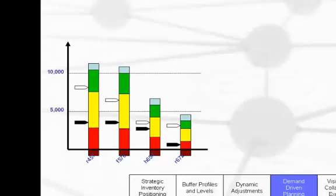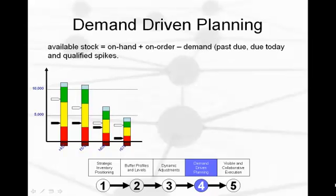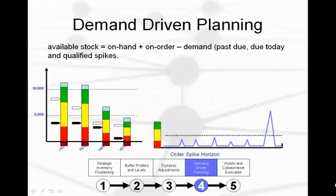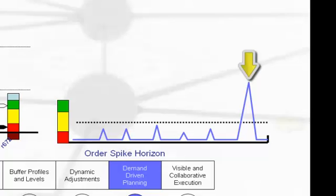The next aspect of DDMRP is the actual planning logic and mechanisms. Let's bring in four parts and their respective buffer levels. For each part, we've provided two points of data: the open arrow represents the available stock position, and the closed arrow represents the current on-hand position. Supply generation is based on the available stock equation: on-hand plus on-order or open supply, minus any unfulfilled demand due today or in the past, plus any qualified future spikes. Each item has an order spike horizon — typically one ASR lead time — and an order spike threshold. Sales orders that trip the threshold within the horizon are added to the available stock equation.